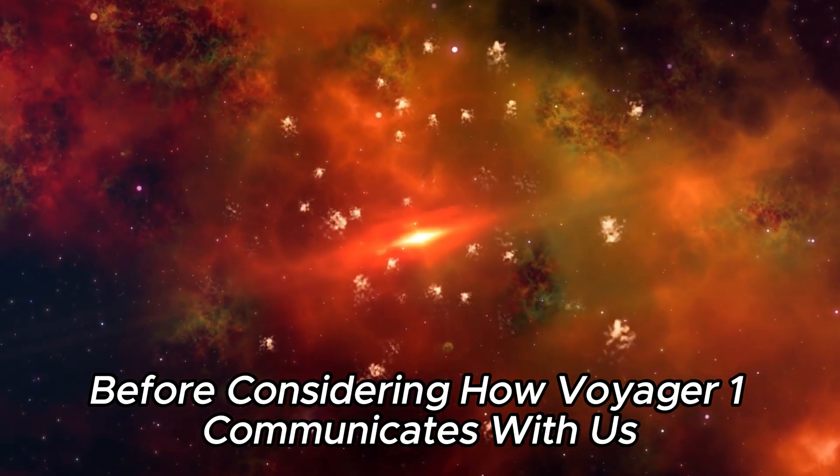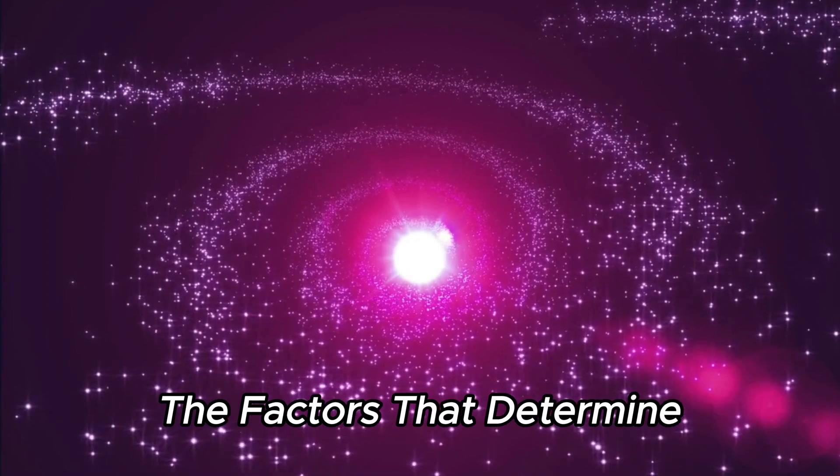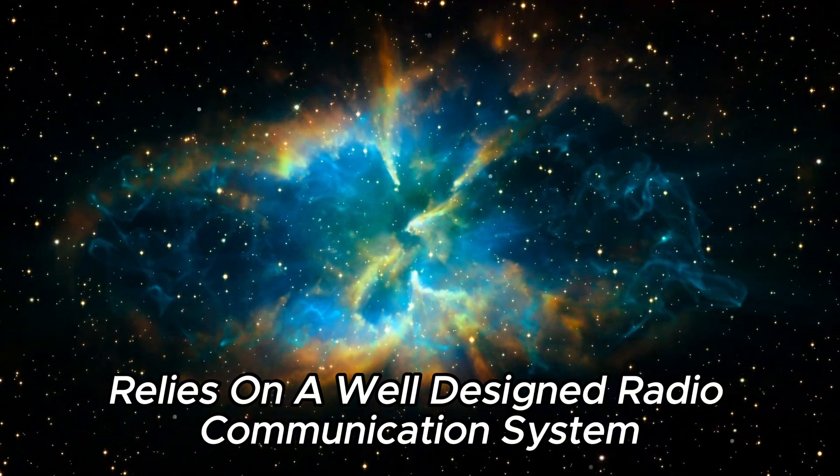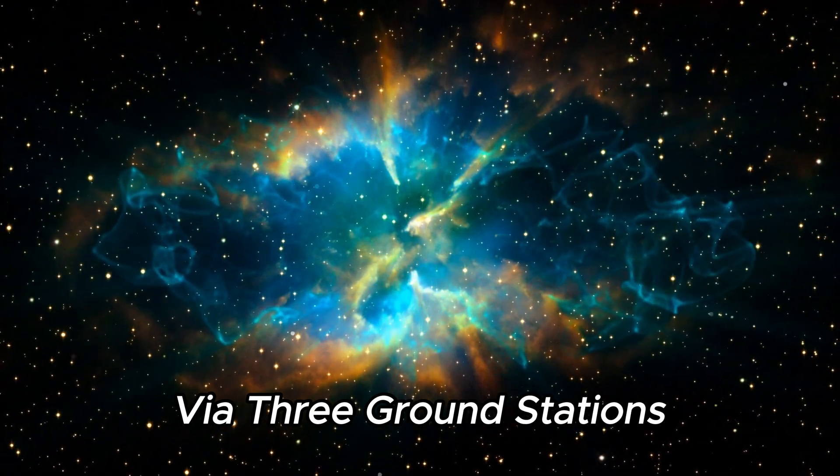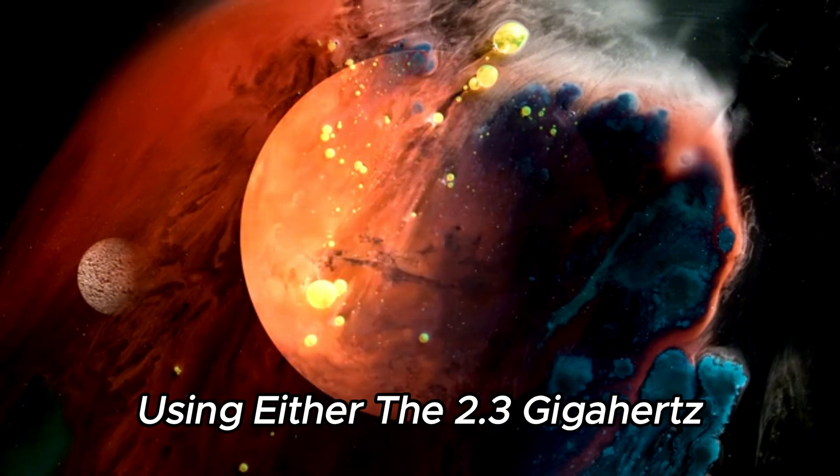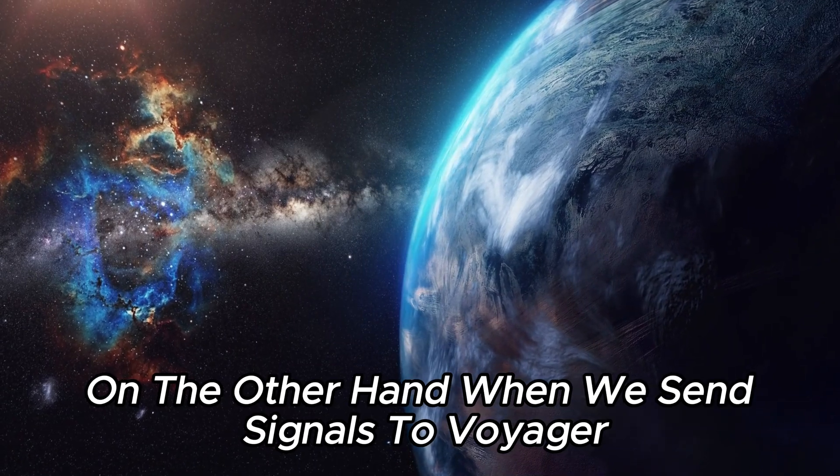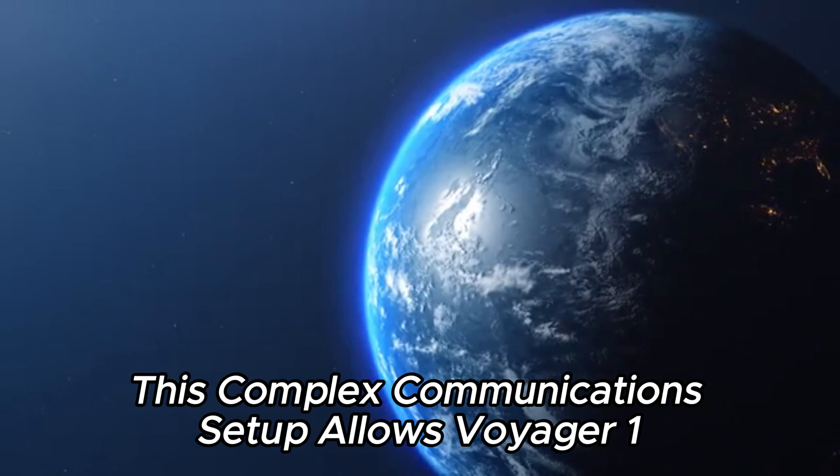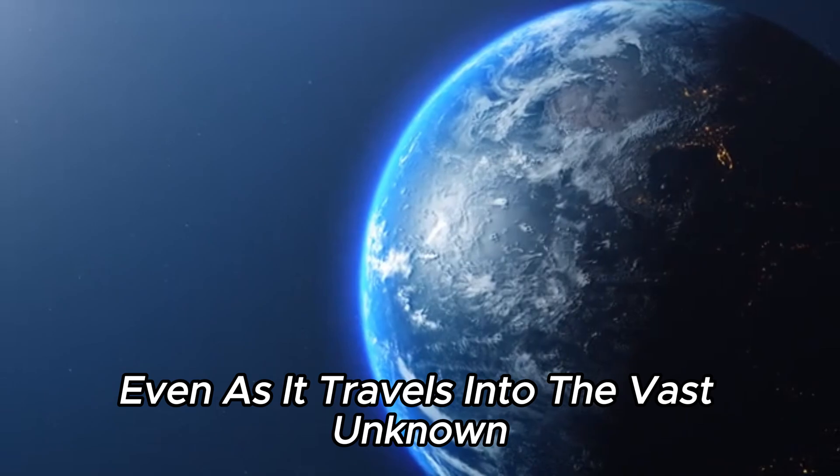Before considering how Voyager 1 communicates with us from 24 billion kilometers away, it is important to understand the factors that determine how far it can travel before losing contact. Voyager 1 relies on a well-designed radio communication system that efficiently transmits and receives radio waves via three ground stations. When Voyager 1 communicates with Earth, it usually does so via Deep Space Network Channel 18, using either the 2.3 GHz or 8.4 GHz radio frequencies. On the other hand, when we send signals to Voyager, we do so at 2.1 GHz. This complex communication setup allows Voyager 1 to maintain contact with our home planet even as it travels into the vast unknown.